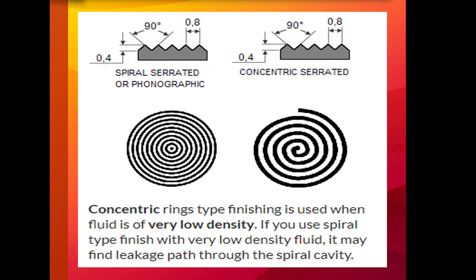The second type is concentric serrated. As the name suggests, the finish comprises concentric grooves. A 90-degree tool is used and the serrations are spaced evenly across the face — in the photo it looks more or less like gear teeth. The spiral serrated finish is also a continuous phonographic spiral groove, but it differs from the stock finish in that the groove is typically generated using a 90-degree tool, which creates a V-geometry with 45-degree angle serrations.